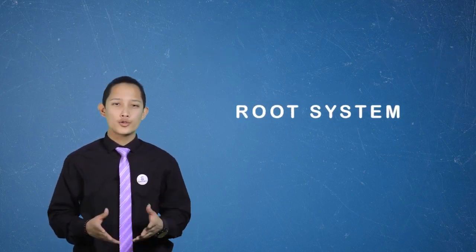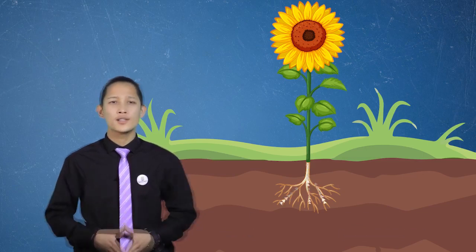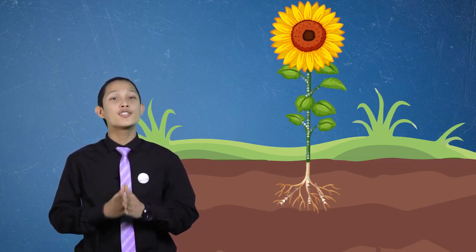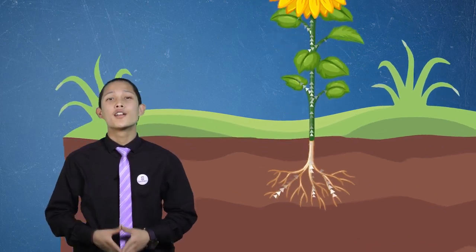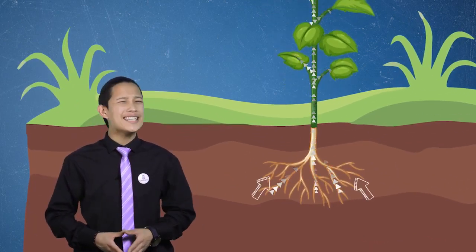Number one: Root System. Roots have two main functions. Number A: to gather and absorb food and moisture from soil. Number B: to store and transport these nutrients to the above ground parts of a plant or the shoot root systems. The process of absorption is actually performed by the tiny root hairs.